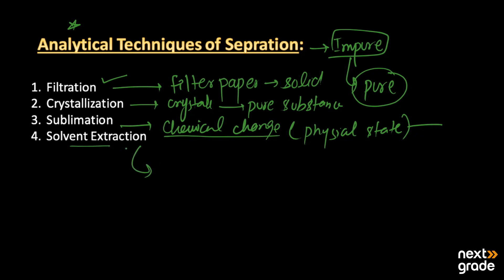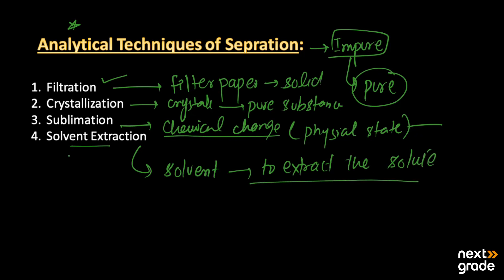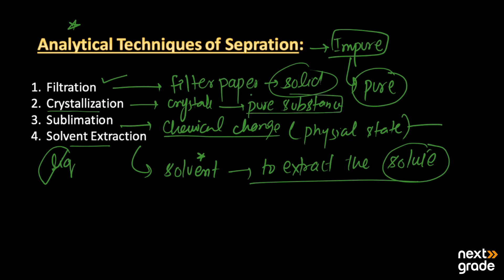The last separation technique is solvent extraction, where we use a solvent to extract solute particles. This is mainly done for liquids, whereas filtration is done for solids. In sublimation, a solid is converted directly into a gas. In crystallization, we obtain a pure substance from an impure one in the form of crystals. These are the main analytical techniques of separation.